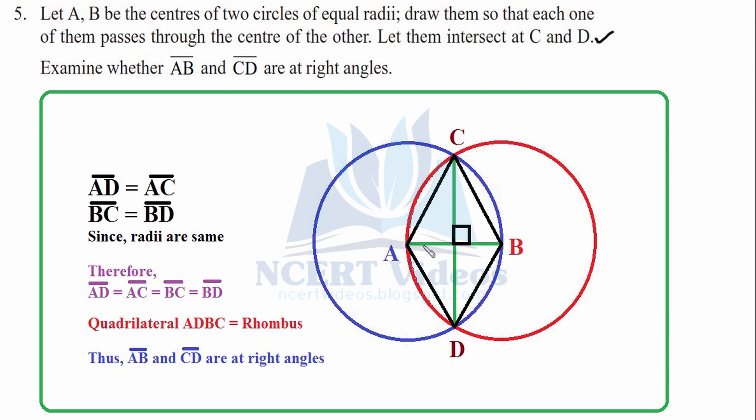Now, examine whether AB line segment and line segment CD are at right angles. What is the line segment? It is the finite distance of any line. AD line segment equals to AC. We can see why. Because it is the radius of this blue circle. These are the radius. Therefore, they are equal. Similarly BC and BD are radius of this red circle. Therefore, they are equal. We can say that AC and AD are equal since they are radius of this blue circle. And similarly BC and BD are radius of this red circle. Now, since radii are same as stated in the question, both have same radii. Therefore, what we can conclude from this is that all the four radii that we have mentioned—AD, AC, BC, BD—they all are equal.